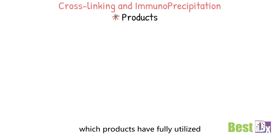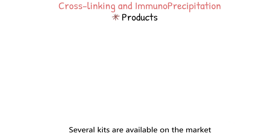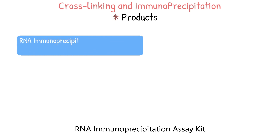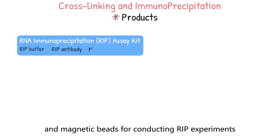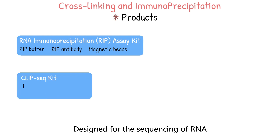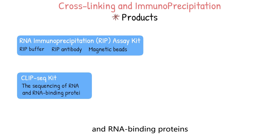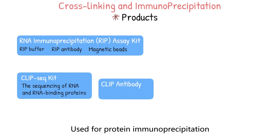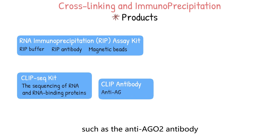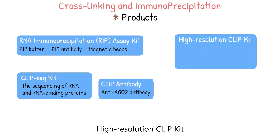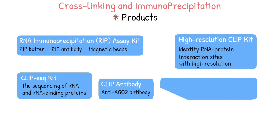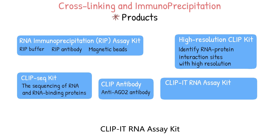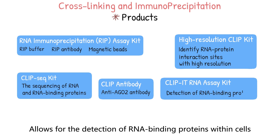Several kits are available on the market. The RNA Immunoprecipitation Assay Kit, or RIP Assay Kit, includes RIP buffer, RIP antibody, and magnetic beads for conducting RIP experiments. The CLIP-Seq Kit is designed for the sequencing of RNA and RNA-binding proteins. CLIP Antibody is used for protein immunoprecipitation, such as the anti-AGO2 antibody. The High-Resolution CLIP Kit is aimed at identifying RNA-protein interaction sites with high resolution. The CLIP-IT RNA Assay Kit allows for the detection of RNA-binding proteins within cells.